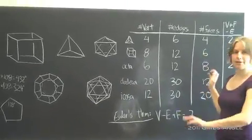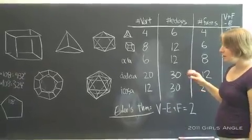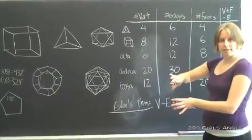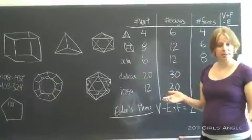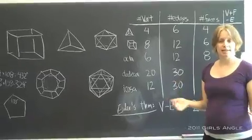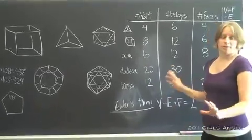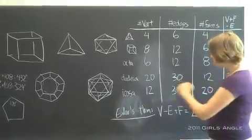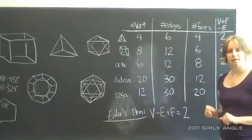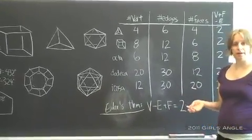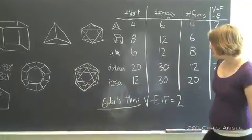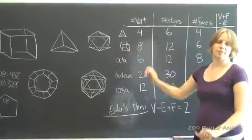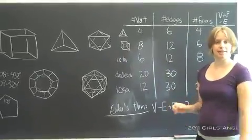It says that V minus E plus F equals two for any polyhedron you can draw. It doesn't have to have any regularity properties. You could have that thing we got by gluing two of these tetrahedra together. You could have, say, a pyramid, something that has different kinds of faces. You could have a horrible, unruly, ugly thing that has sort of no symmetry at all. It would still satisfy Euler's theorem. The challenge that I'm going to leave you with is that it's possible to use Euler's theorem to provide a second proof that these five platonic solids are the only ones that exist.